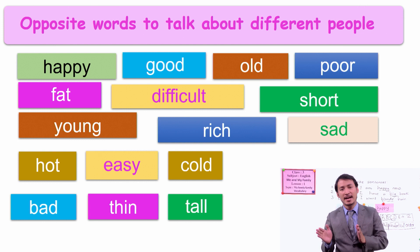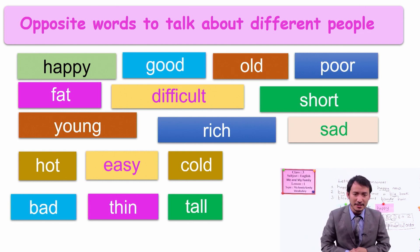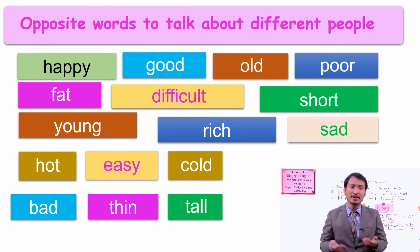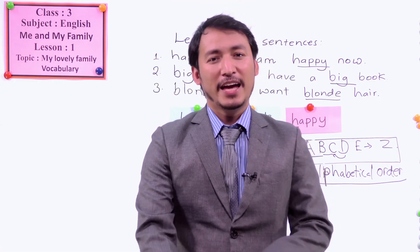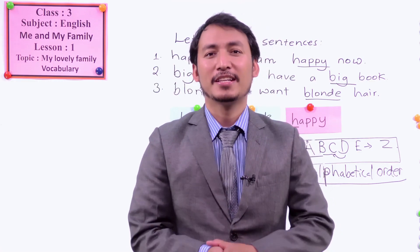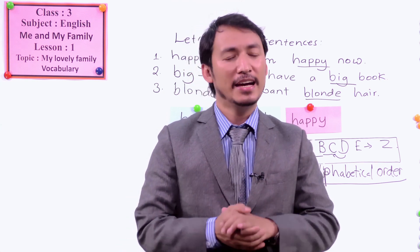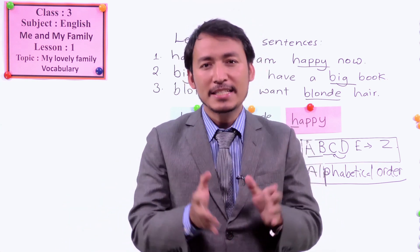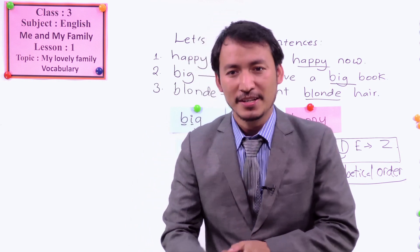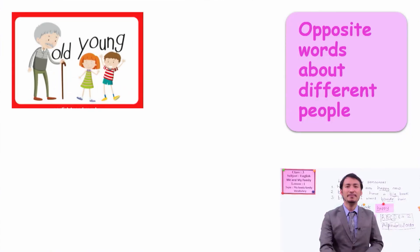Happy and sad are totally different words. So opposite words means different in meaning, opposite in meaning. Now we have these different describing words and they have opposite meanings. Let's understand through the pictures.